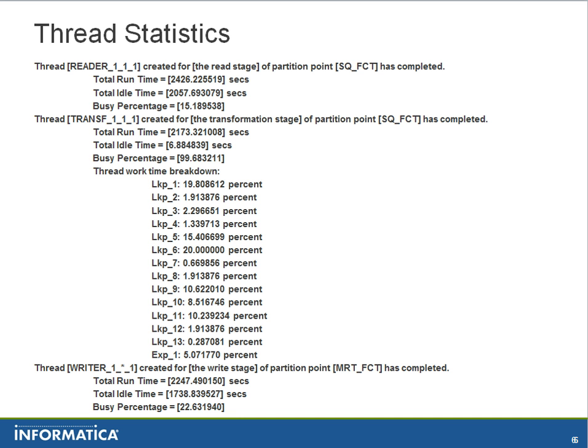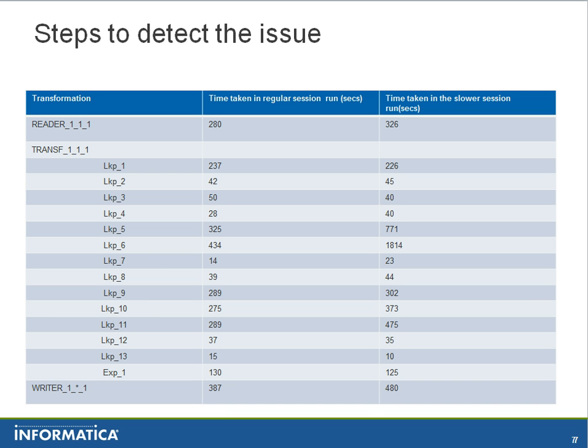If a specific transformation has taken a longer time to complete, we can specifically focus on that transformation and check all the extraneous things that could be affecting it — for example, non-availability of memory or a file system issue. This thread statistics helps us narrow down specifically to the transformation that is causing the bottleneck. Now we will look into how exactly we can detect a specific bottleneck by examining the thread statistics.